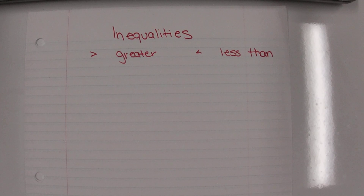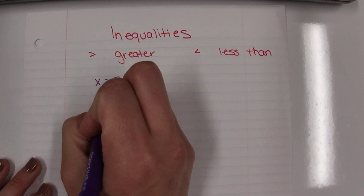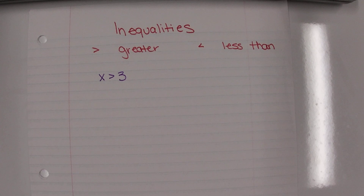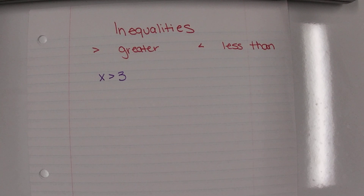Inequalities have a new added feature — they always include an infinite amount of answers. It's no longer just x equals three, one single answer. Now we'll have something like x is greater than three, and there are a lot of numbers greater than three: four, five, six, seven, eight, nine, ten — but there's also 3.1, 3.11, 3.111, and so on. I can do that all day. That's not even talking about 3.01 or 3.001.